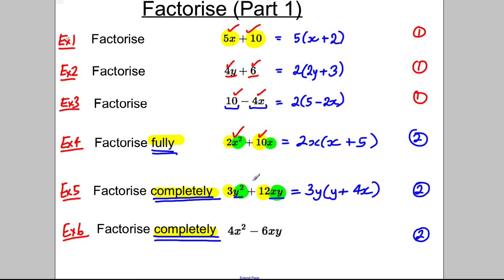Last one: do it as we've done before. Look at the number term separately—there's 4 and 6. Look at the algebra term separately—there's x² and xy. The biggest factor that goes into 4 and 6 is 2. What about x² and xy? We can take an x out. Open the bracket. What must go here? 2x. What must go here? Negative 3y. Why? Because 2x × 2x is 4x², 2x × negative 3y is negative 6xy. We're done for those examples.